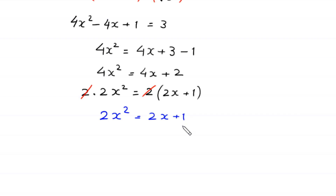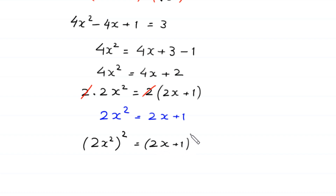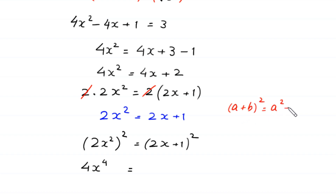Now we take the square of both sides of this equation: 2x squared whole squared equals 2x plus 1 whole squared. The left side becomes 4x to the power 4. According to the algebraic identity, a plus b whole squared equals a squared plus 2ab plus b squared.